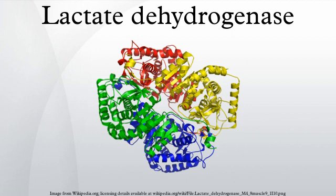Tissue breakdown releases LDH, and therefore LDH can be measured as a surrogate for tissue breakdown, for example in hemolysis. Other disorders indicated by elevated LDH include cancer, meningitis, encephalitis, acute pancreatitis, and HIV.